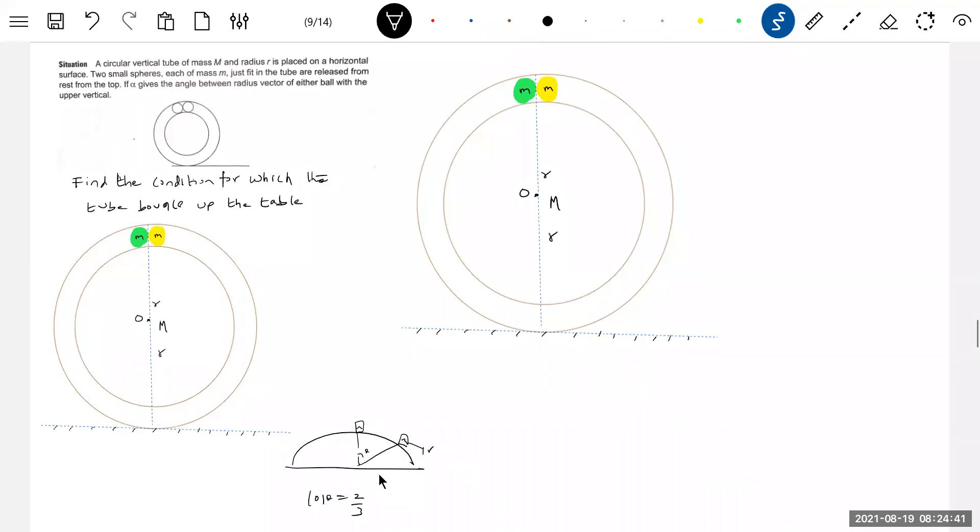Now he is telling there is a certain angle theta at which it is going to lose contact. Then he is asking what is the condition for that - how the mass of the ball and mass of the tube are related. Very little information is given for us. With this we should manage. Now come back to this one.